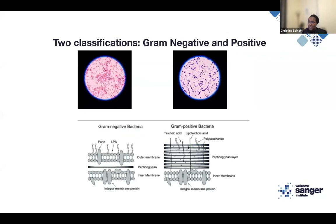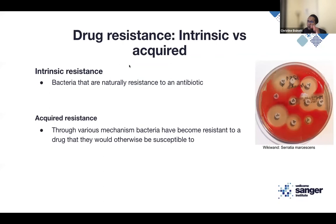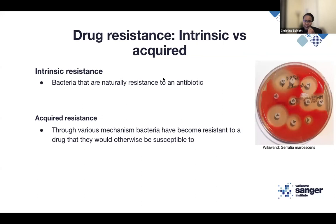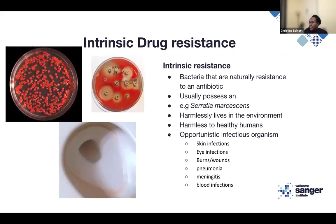There are two types of resistance: intrinsic and acquired. Intrinsic resistance means a bacteria is naturally resistant to an antibiotic without having been exposed to it — just as your skin is your natural intrinsic resistance to outside forces. Acquired resistance is where, through various mechanisms like mutation, the bacteria acquire resistance to a drug.